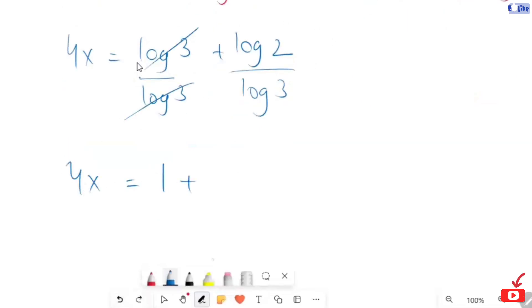Here, I'm going to use the change of base rule. That is log a over log b is equals to log base b of a. So, this becomes log base 3 of 2.